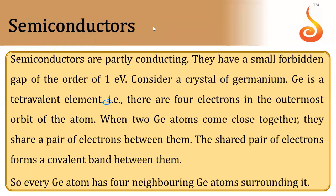Semiconductors are partly conducting. Their energy gap is very small — around one electron volt. Germanium is a tetravalent element, meaning it has four electrons in the outermost orbit of the atom. When two germanium atoms come close together, they share a pair of electrons between them, forming covalent bonds, as shown in the diagram.